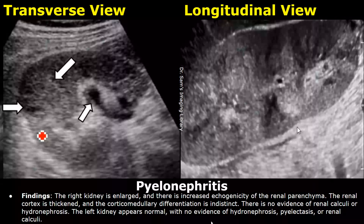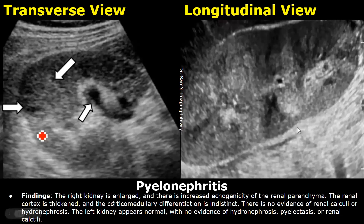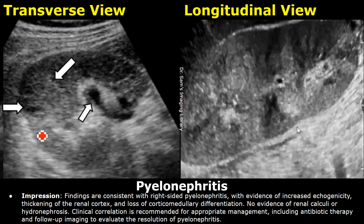Here is a case of pyelonephritis. The kidney is enlarged and there is increased echogenicity of the renal parenchyma. The renal cortex is thickened and the corticomedullary differentiation is indistinct. Here is the impression. The findings are consistent with right-sided pyelonephritis. In this case, there was increased echogenicity, chronic kidney disease, thickening of renal cortex, and loss of corticomedullary differentiation.